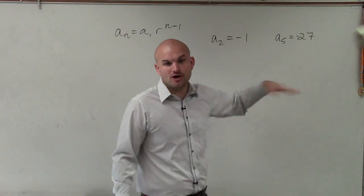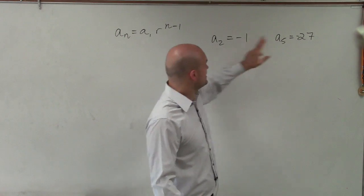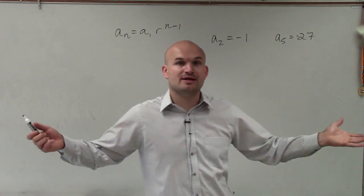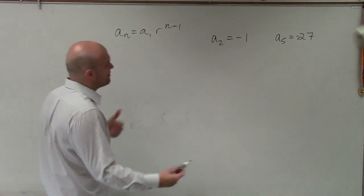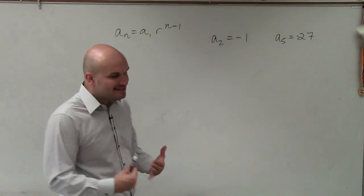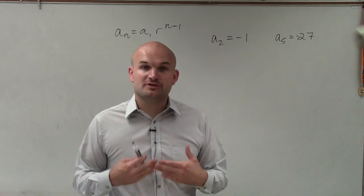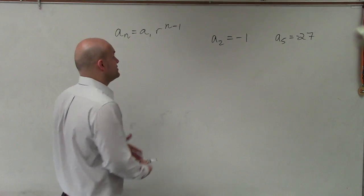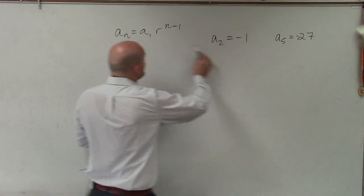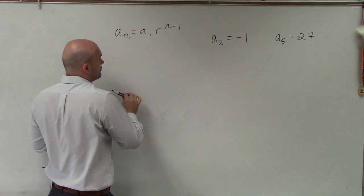They're not right next to each other. So I can't say negative 27 divided by negative 1 and say my ratio is 27, because they're not right next to each other. So what I need to do is determine r. And one way I can do that is take the information that I have and plug it into our general formula.